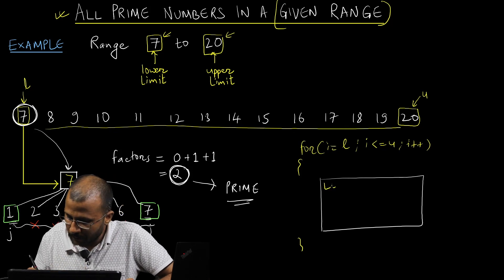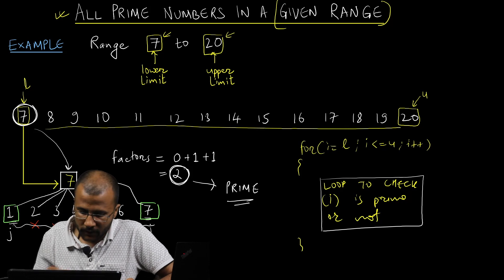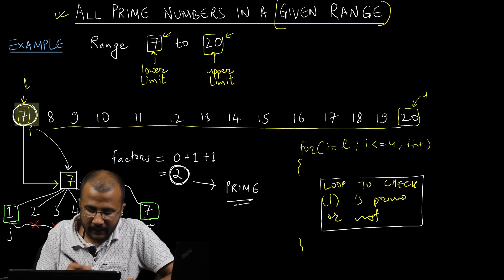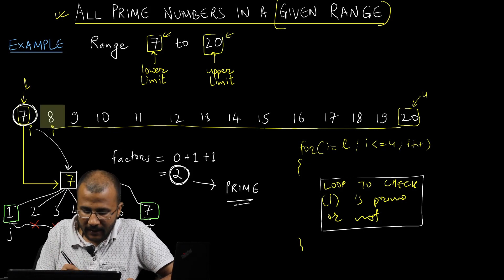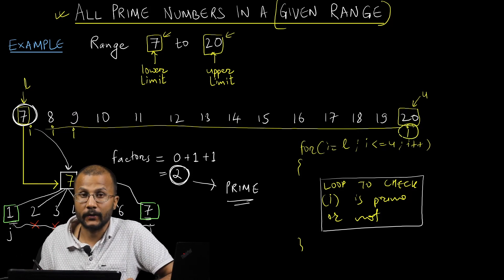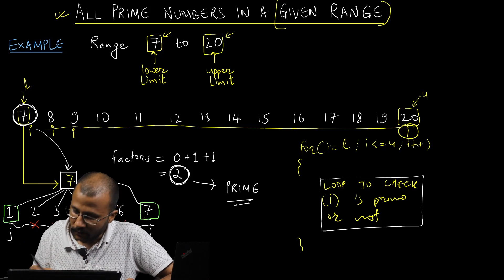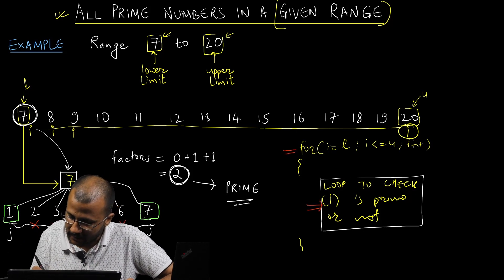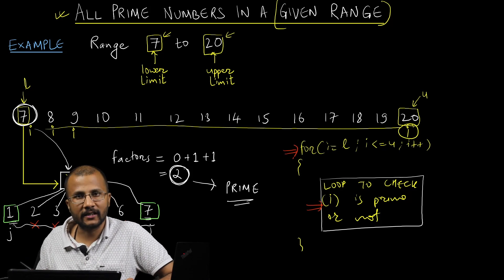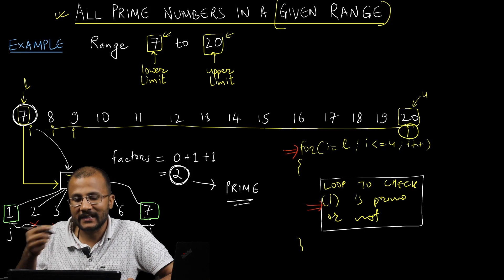I will have to write a loop to check if the number i is prime or not. Initially this is i, next time this is i, next time this is i, and the last value of i is 20. So here I will be needing a nesting of loops — a loop inside a loop. This is called nesting of loops, and this problem can be easily solved by writing a nested loop.